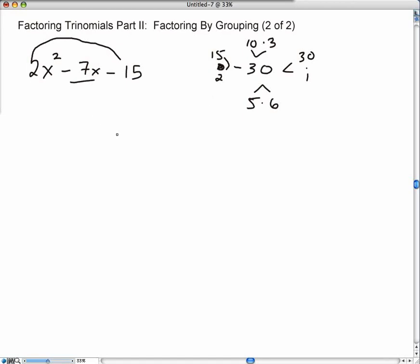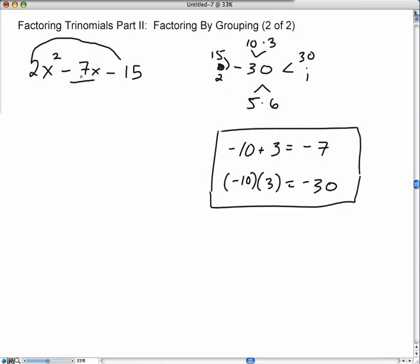Now we look at the middle term, negative 7. What two factors out of all these would make a 7 if you add them or subtract them? Not 5 and 6. That would give you 1 or 11. Not 30 and 1. That would give you 29 or 31. 15 and 2 would give you 17 or 13. But 10 and 3 is perfect. If I subtract 10 and add 3, that's going to give me negative 7. And to make sure I got these factors right, negative 10 times 3 gives me negative 30. So that passes the test.